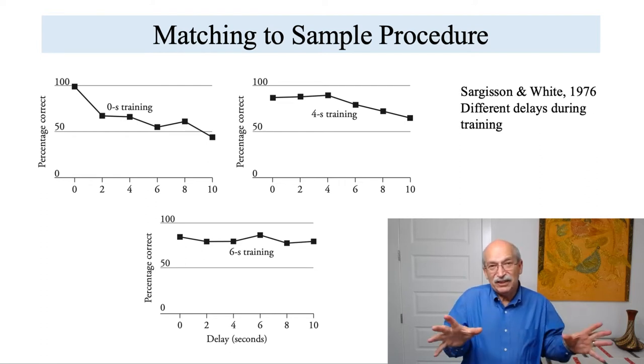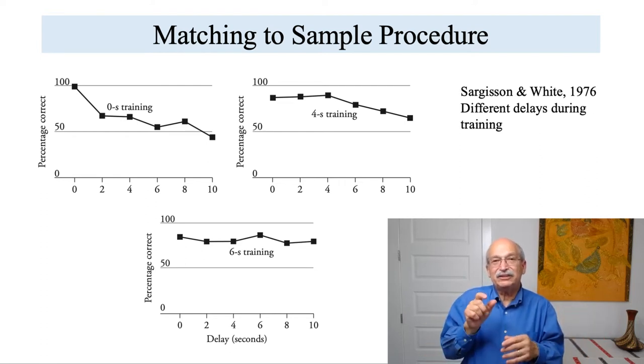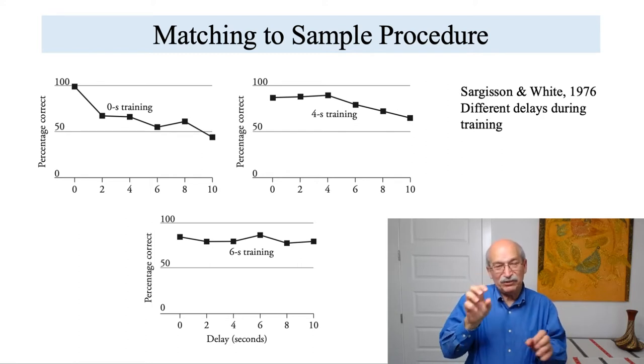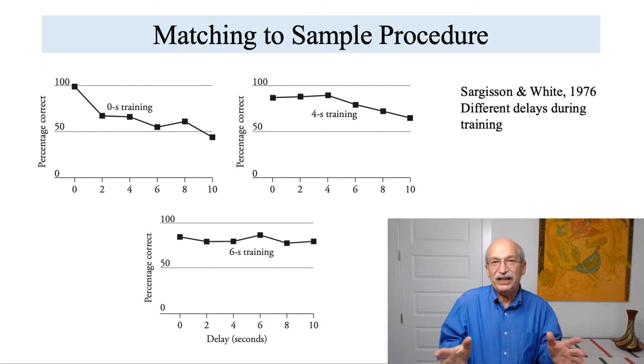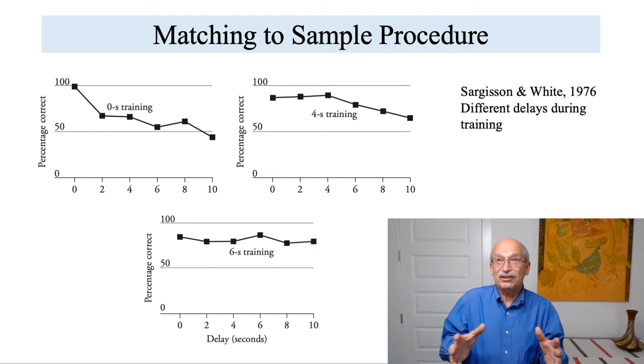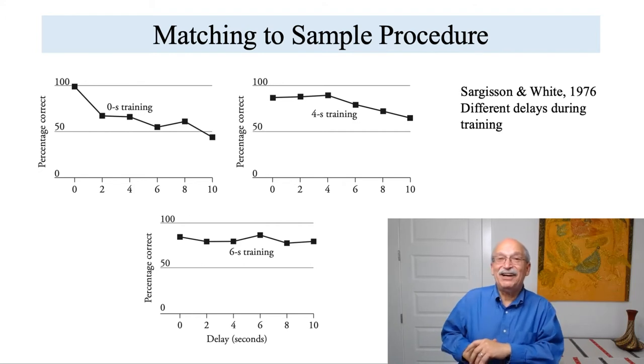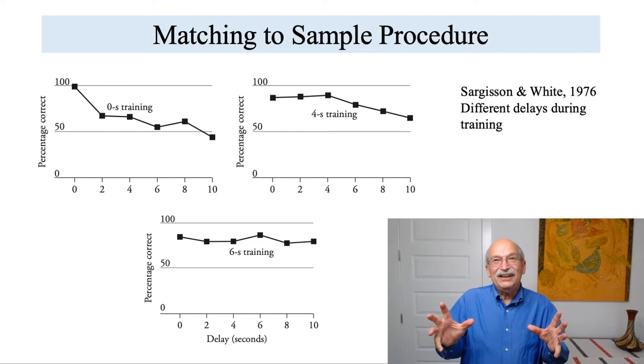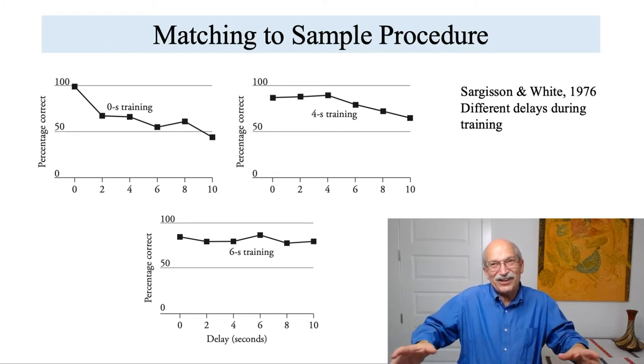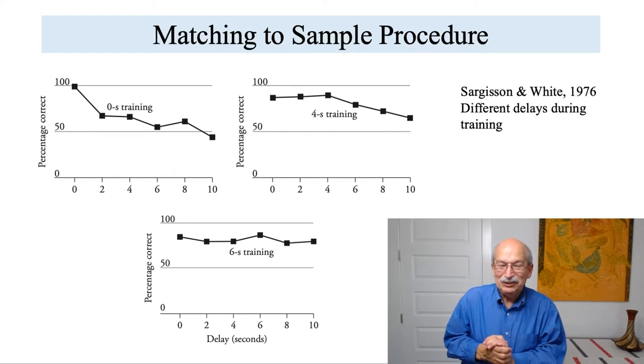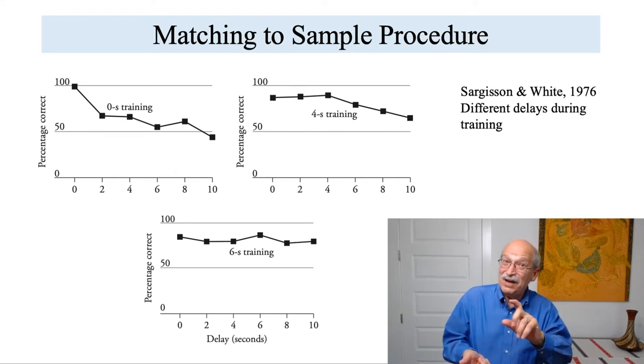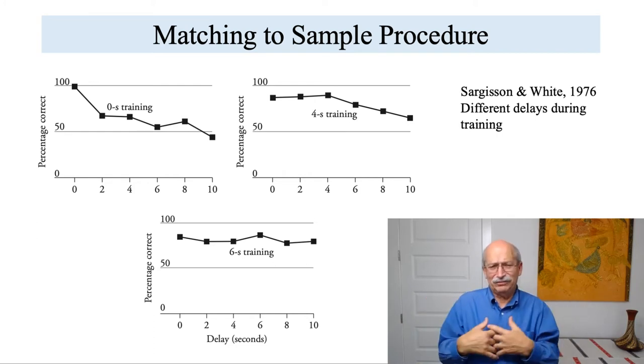You can also be trained. So here the training involved the delay between the sample and the choice alternatives during the training phase. So the longer the delay was on each of those training trials, the better the pigeons managed to remember things and the more shallow their memory decay function was. So here memory, the amount of memory you were trained on was constant across a given procedure, but it turns out you can also turn memory on and off.